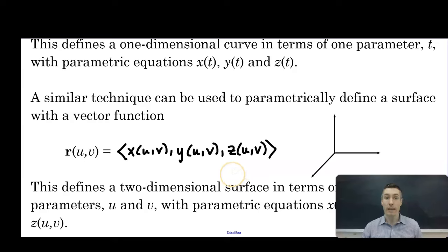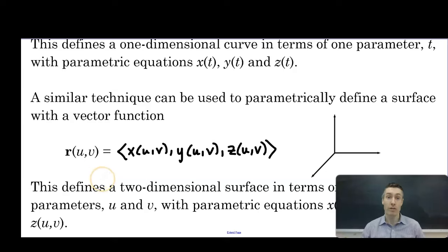A couple of things to pay attention to here. First, we're now parameterizing in terms of two variables as opposed to one, so we have the parameters u and v. Unfortunately, they chose the next two letters in the alphabet, u and v, and those two letters look very similar to one another. Make your best effort to differentiate the way you write your u's and your v's so that we don't mix them up.